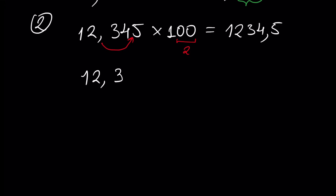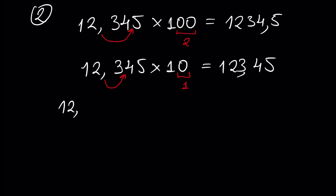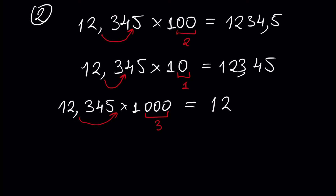Another example: 12.345 times 1000 — we move the floating point because we have three zeros, so we move three times to the right side, and the result is 12345. So when multiplying by a power of 10, move the decimal point to the right by the number of zeros in the multiplier.